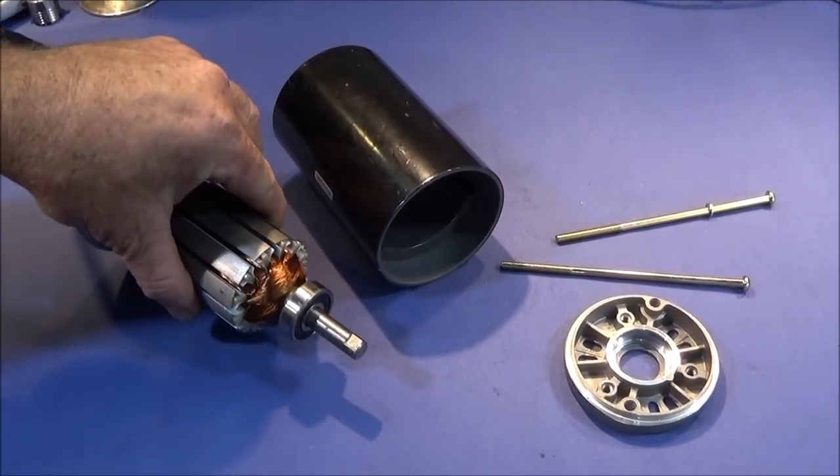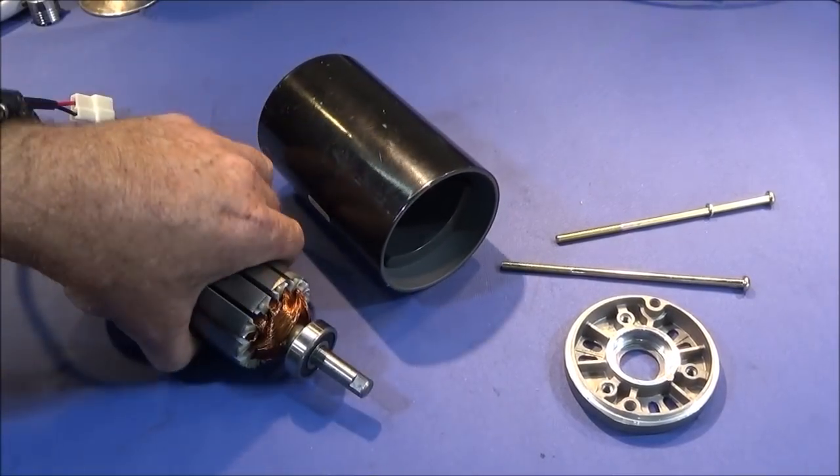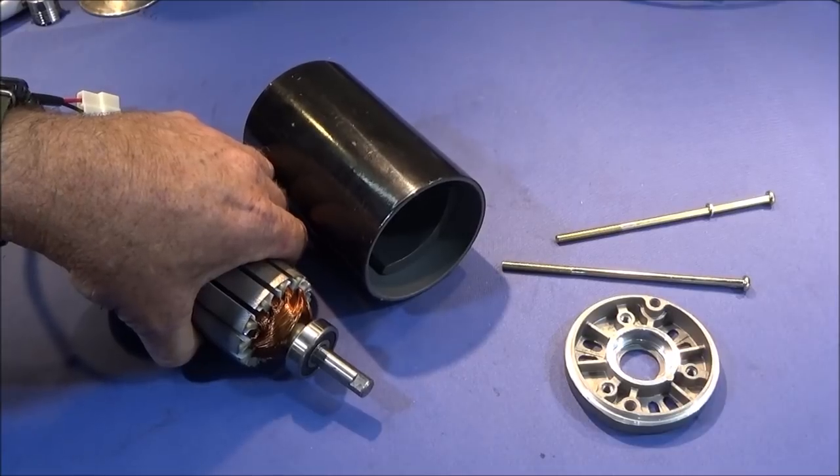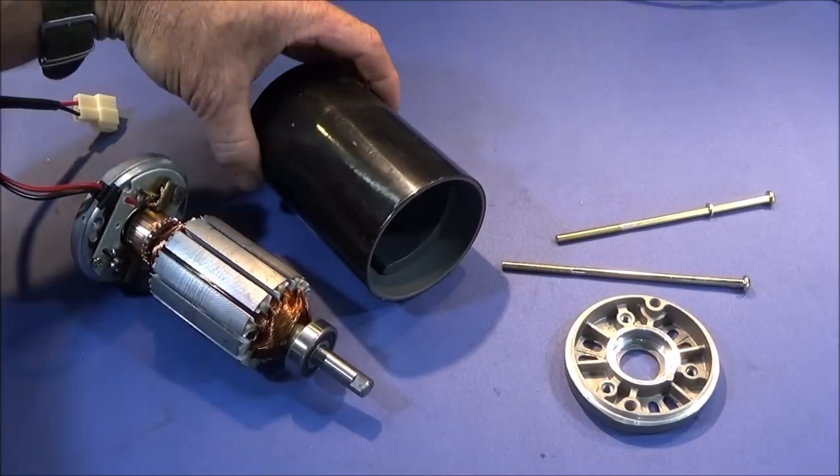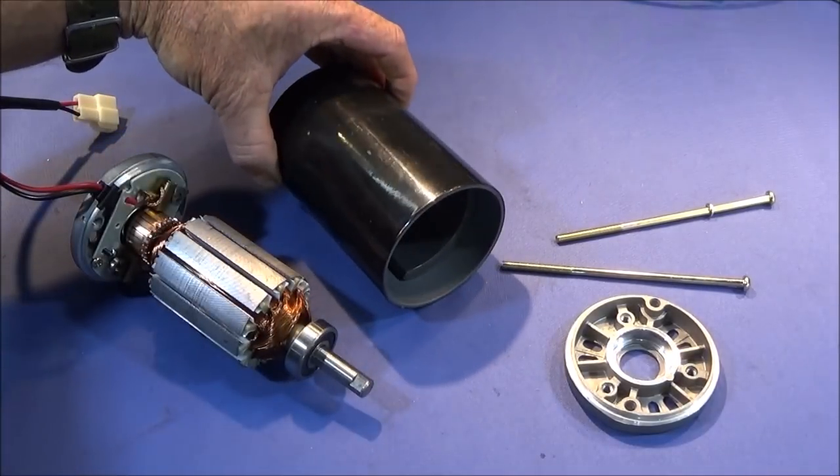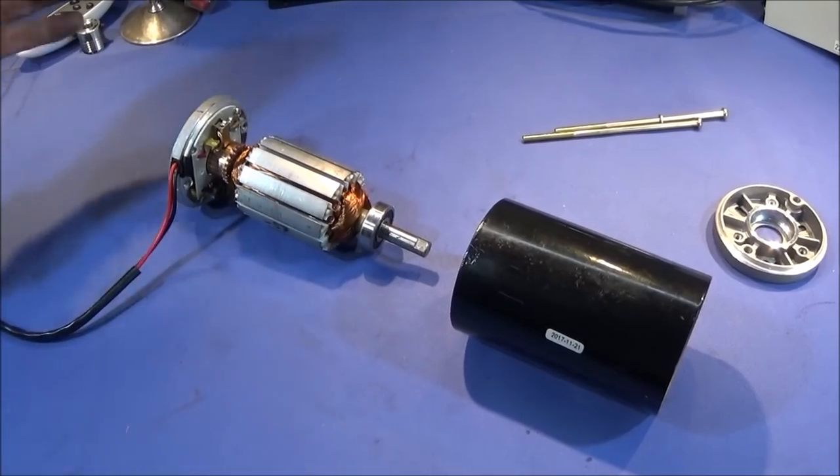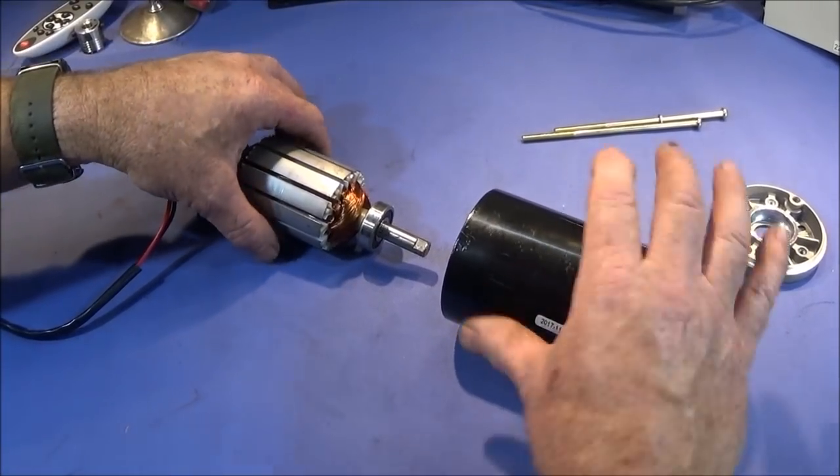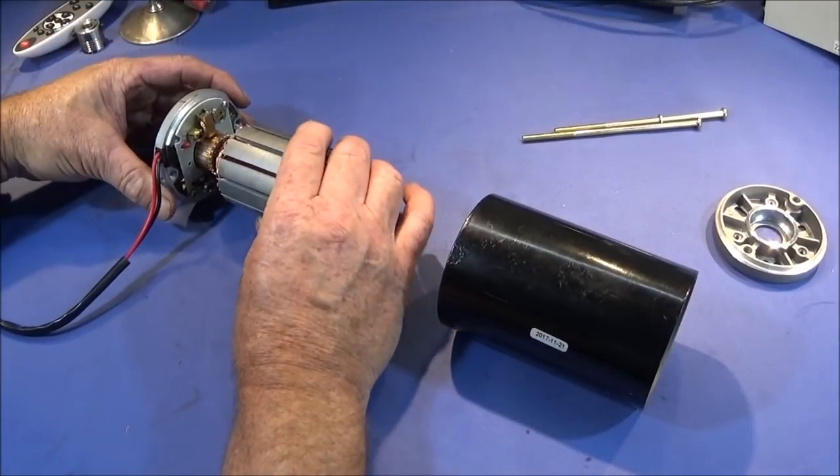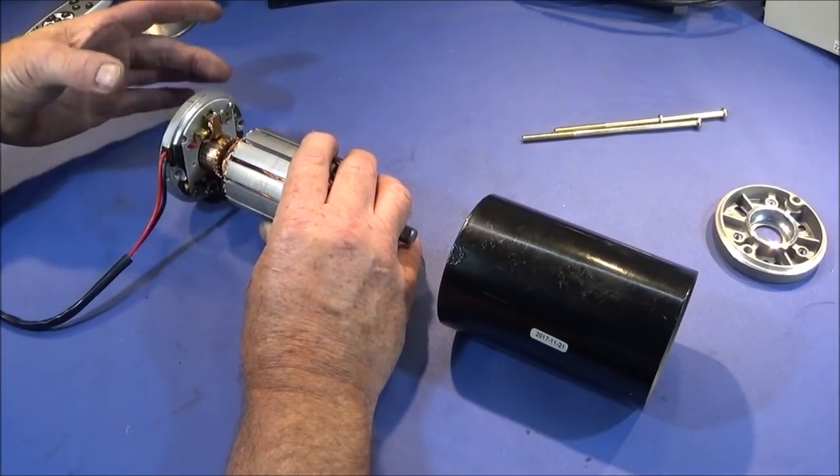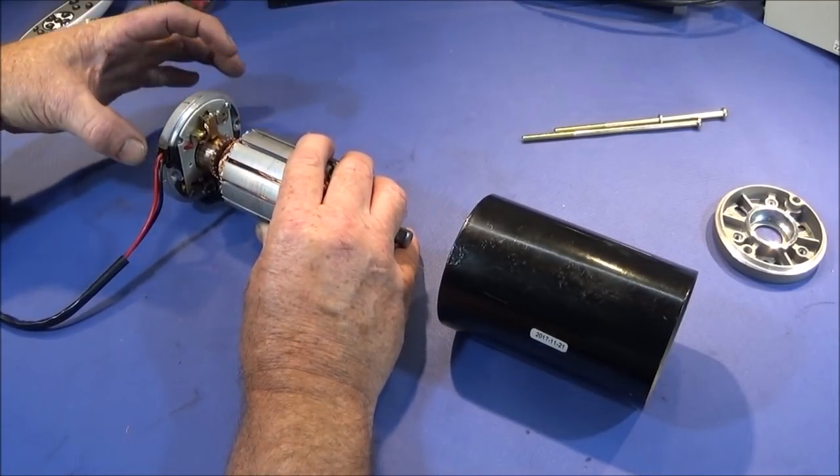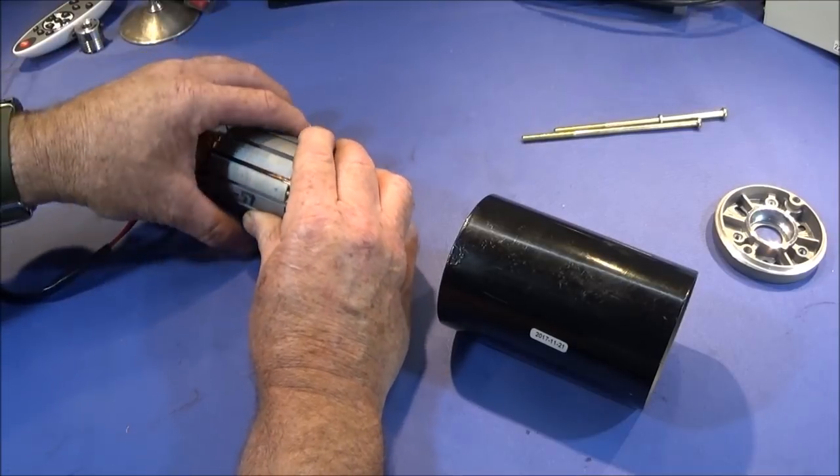When you replace the armature in the housing, you have to hold it very tightly so it doesn't get pulled forward suddenly because those magnets are very easy to chip. Again, you have to be really careful with those strong magnets that the armature doesn't get pulled forward from the back end here, otherwise those brushes will fly out of position.